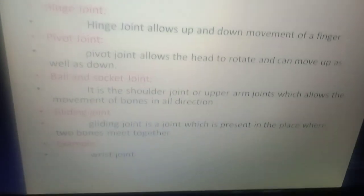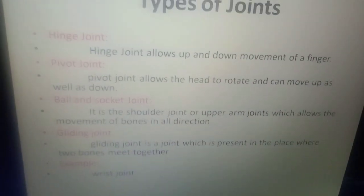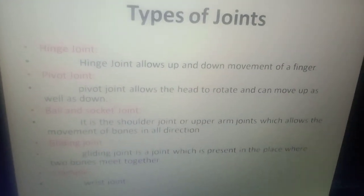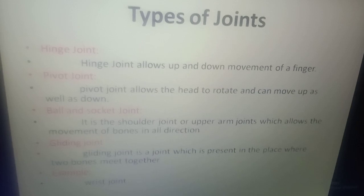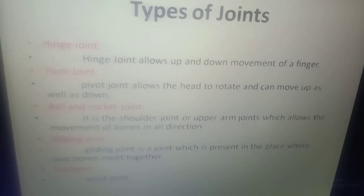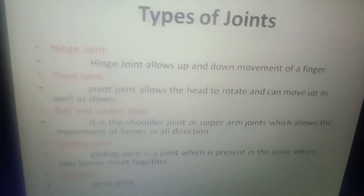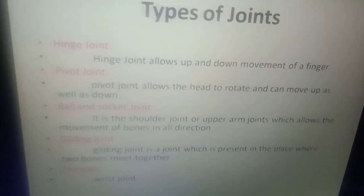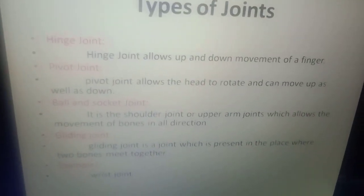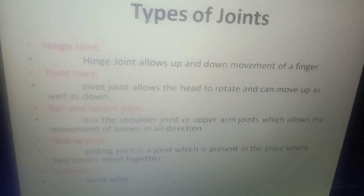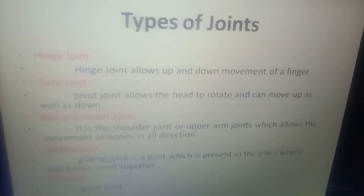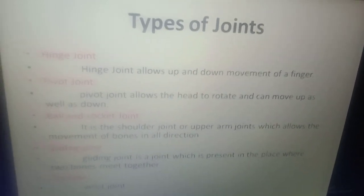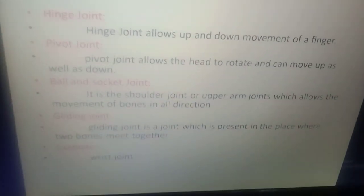Types of Joint: Hinge joint allows up and down movement of fingers. Pivot joint allows the head to rotate and can also move up and down.